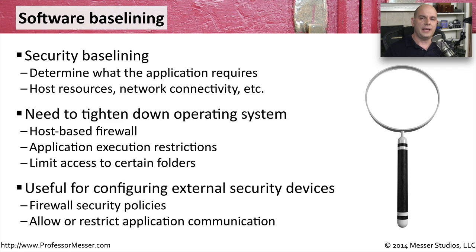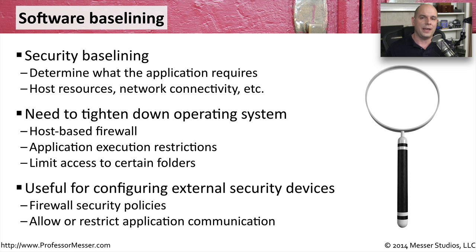Once you've gathered this application baseline and you understand how the application communicates, you can then use that information to configure external devices like firewalls and intrusion prevention systems. Those can be locked down to only allow the proper communication, and if anything goes out of the scope of what's normally seen for this application, you can choose to disallow that communication through the network.